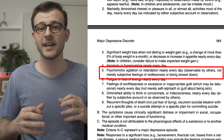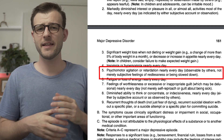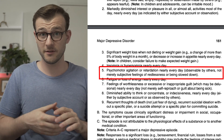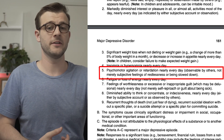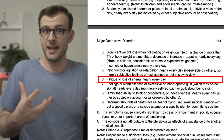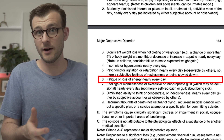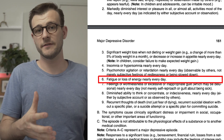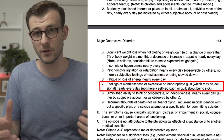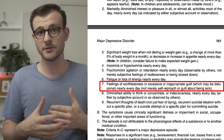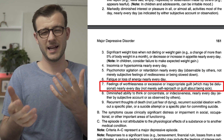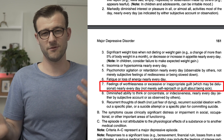Psychomotor agitation or slowing is a really important symptom and is more commonly seen by an observer, which highlights the importance of getting a collateral history or observing it yourself in the psychiatric interview. The next symptom is fatigue — if you're not sleeping well, you'll feel quite fatigued, and even those sleeping a lot will feel fatigued. They may also experience deep guilt, which can sometimes be delusional, raising concern for depression with psychotic features.